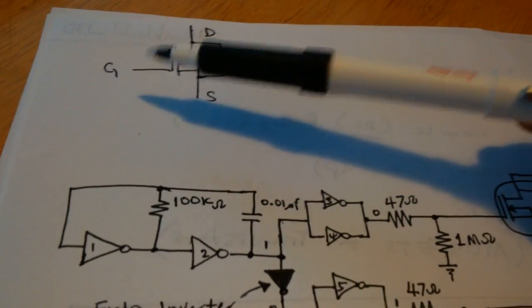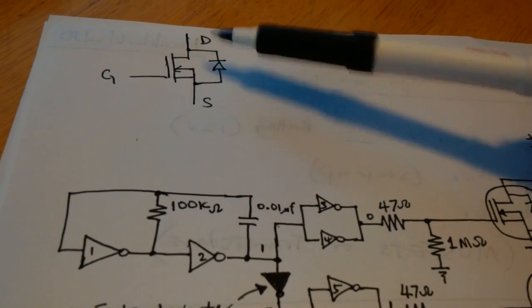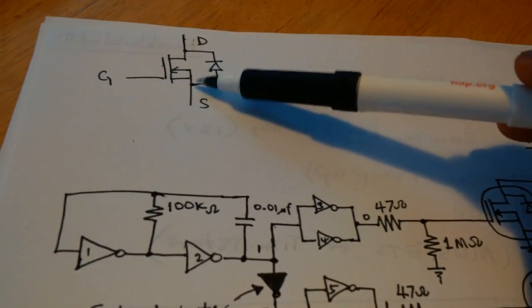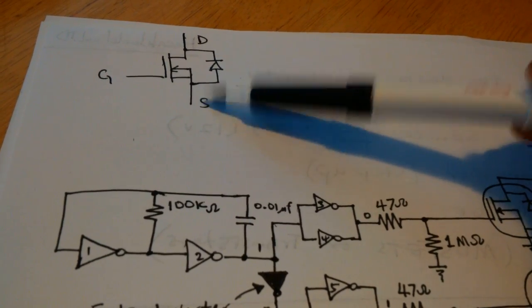Now, this is the configuration. You have the gate, the drain, and the source. For the transistor, you have the base, the collector, and the emitter.